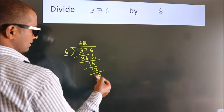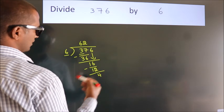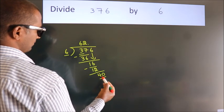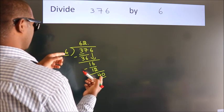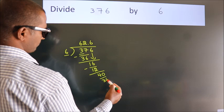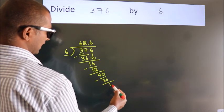After this, no more numbers to bring down. So what we do is, we put a dot and take 0. So, 40. A number close to 40 in the 6 table is 6 times 6, 36. Now we subtract. We get 4.